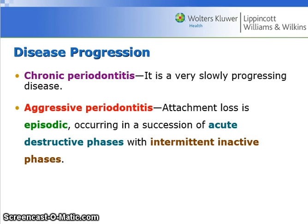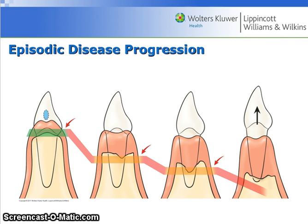Regarding disease progression, chronic periodontitis is a slow progressing disease. Aggressive periodontitis exhibits episodic attachment loss occurring in a succession of acute destructive phases with intermittent inactive phases. This diagram shows the episodic disease progression.